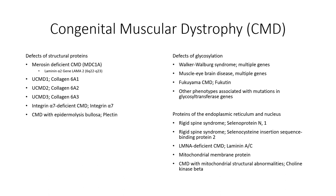Genetic studies identified the gene product, now called Fukutin, which is localized to the Golgi apparatus and is believed to be involved in glycosylation of alpha-dystroglycan, a dystrophin-associated glycoprotein complex protein.